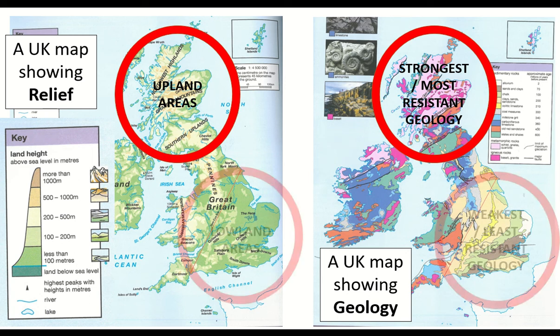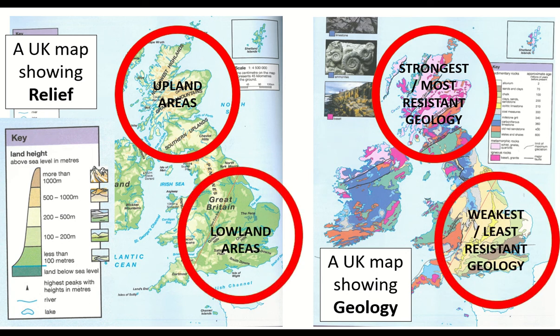The lowland areas are coincidentally where you also find your weakest or least resistant geologies - your younger sedimentary rocks. And that's no coincidence because essentially you're going to get low areas, flat land near the sea, nearer to sea level, where you've got rocks that can easily be eroded by the elements. So as that land erodes down and weathers away, it'll create lowland.